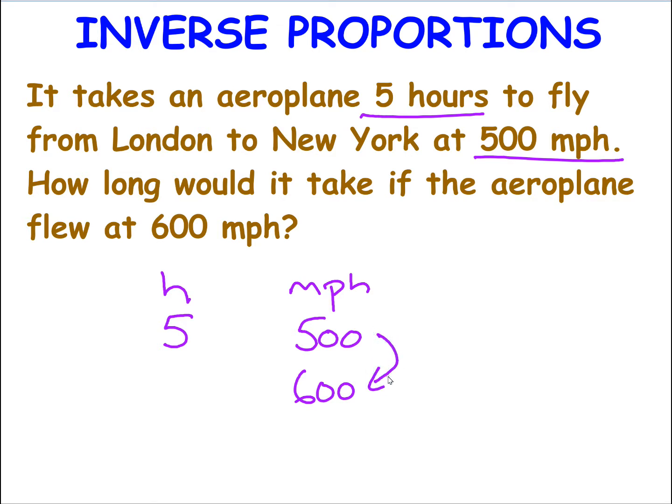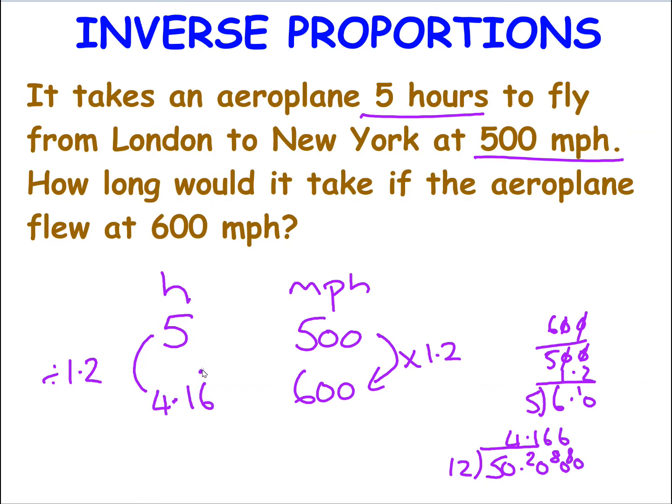So how did I get from 500 miles an hour to 600 miles an hour? Well, if we divide 600 by 500, we can knock off the zeros, and it's the same as dividing 6 by 5. So I've multiplied by 1.2. So on the other side, I need to divide 5 by 1.2. So I can see that it would take me 4.16 hours to fly from London to New York at 600 miles an hour.